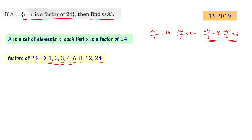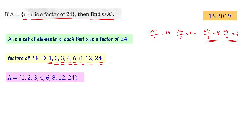So the factors of 24 are: 1, 2, 3, 4, 6, 8, 12, and 24. These are the factors of 24. Let's write them in set form. The set A has 8 elements, so the cardinal number of set A, or n(A), is 8.